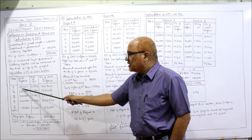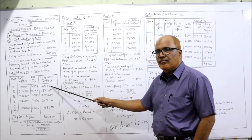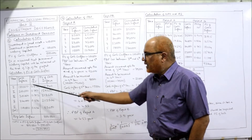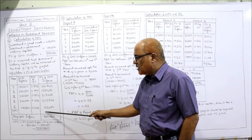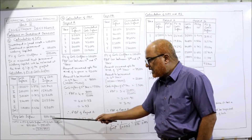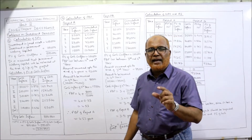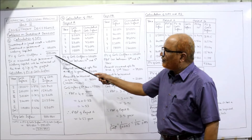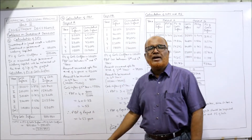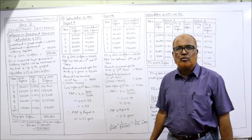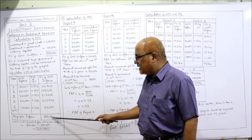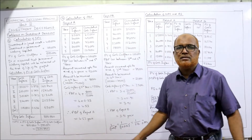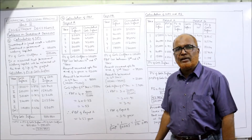1 lakh 80 thousand multiplied by 0.893 = 1 lakh 6740. 2 lakh multiplied by 0.797 = 1 lakh 59 thousand 400. Multiply all cash inflows with their PV factors. The total PV of cash inflow is 8 lakh 860. PV of cash outflow is 5 lakh. So NPV = 8 lakh 860 minus 5 lakh = 3 lakh 860. That is the net present value.